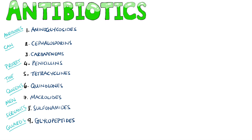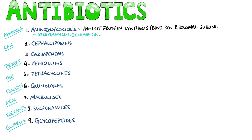First we have aminoglycosides. Examples include streptomycin and gentamicin. This class mostly works by inhibiting protein synthesis by binding to the 30S subunit of bacterial ribosomes. They don't affect protein synthesis in humans because we have 40S and 60S subunits rather than 30S and 50S. Aminoglycosides cover gram-negative and gram-positive bacteria but do not work on anaerobes.